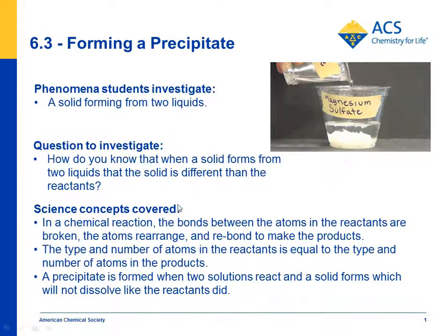The big science concepts covered are: in a chemical reaction, the bonds between the atoms in the reactants are broken. The atoms are rearranged and rebonded to form the products. The type and number of atoms in the reactants is equal to the type and number of atoms in the products, because mass is conserved. A precipitate is formed when two solutions react and a solid forms, which won't dissolve like the reactants dissolved to make the original solution — so it's something different, meaning a chemical reaction took place.